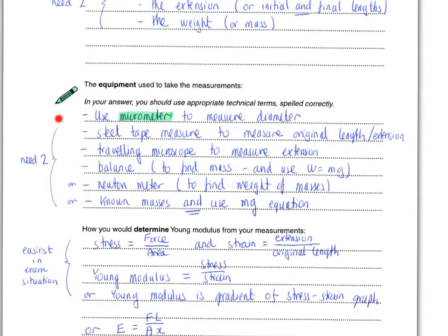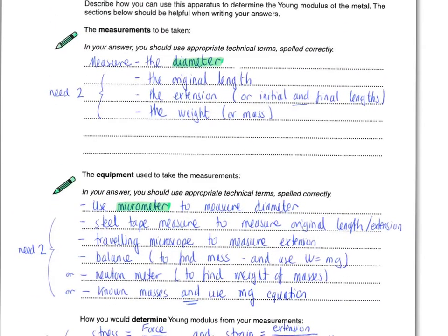So second part, what equipment are we going? And again, we've got a pencil mark. And micrometer was what we're after. So we're going to use a micrometer to measure the diameter. And really, the key here is to think about everything I said I was going to measure. So I said I was going to measure the diameter. So let's mention that I'm going to use a micrometer to measure that.